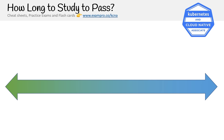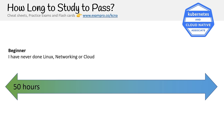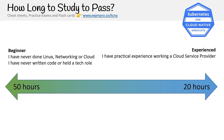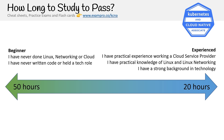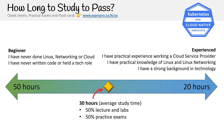How long should you study to pass? For beginners who've never done Linux, networking, or cloud, expect about 50 hours since you'll be filling that knowledge outside this course. If you have worked with a CSP like AWS, Azure, or GCP, and know Linux and Linux networking, you're looking at about 20 hours. The course video content alone isn't even 20 hours, but you have to factor in hands-on labs and practice exams. The average time is about 30 hours — 50% lectures and labs, 50% practice exams — roughly a couple of hours a day for three weeks.